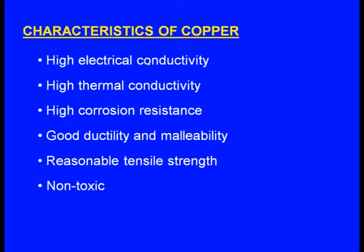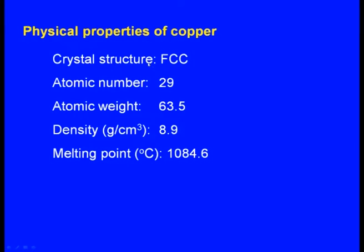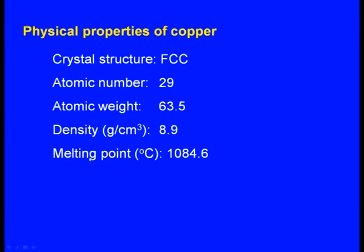These are the characteristics of copper — all are favorable characteristics, that is why there is a lot of demand for copper in the industry, not only in the industry but also for domestic applications. The physical properties of copper: crystal structure is FCC (face-centered cubic), atomic number is 29, atomic weight is 63.5, density 8.9 grams per cc, melting point is 1084.6°C.